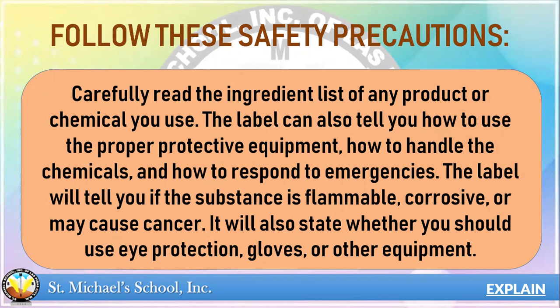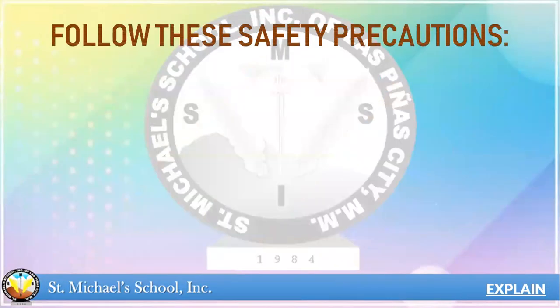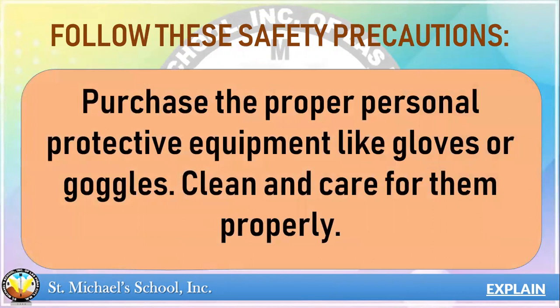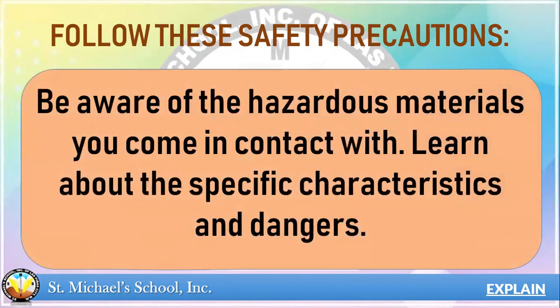The label will also state whether you should use eye protection, gloves, or other equipment. Purchase the proper personal protective equipment like gloves or goggles, and clean and care for them properly. Be aware of hazardous materials you come in contact with. Learn about their specific characteristics and dangers.